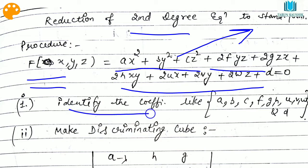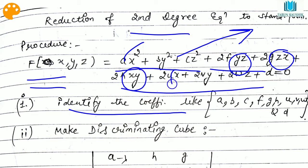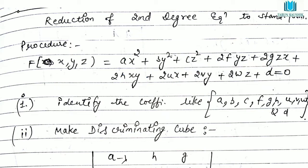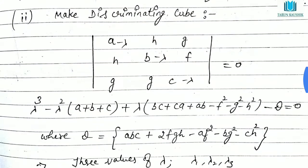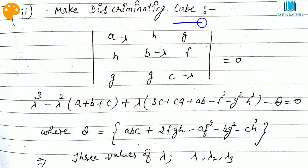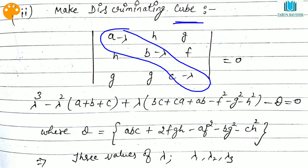First, you have to identify the coefficients — the coefficient of x², y², z², the coefficient of yz, zx, xy, and the constant term d. So you identify terms a, b, c, f, g, h, u, v, w, and d. Now you have to make a discriminating cubic. We call it a cubic because we reduce lambda from the principal diagonal, that is a minus lambda, b minus lambda, and c minus lambda.